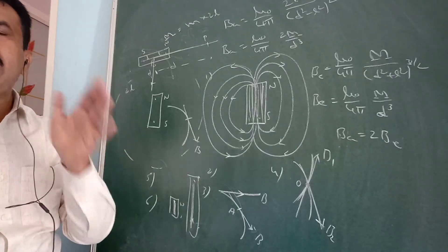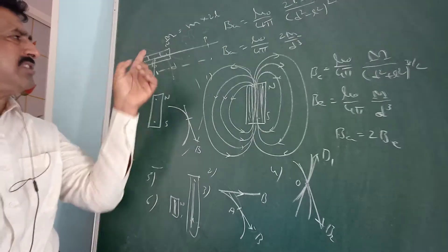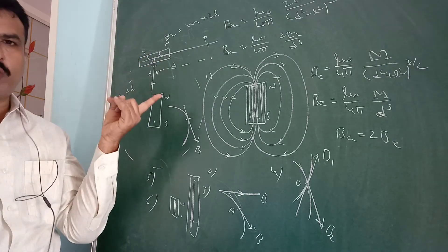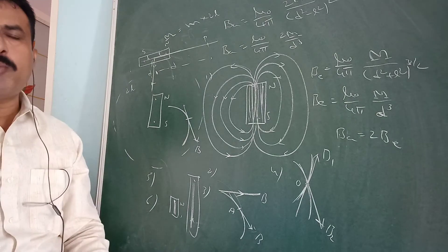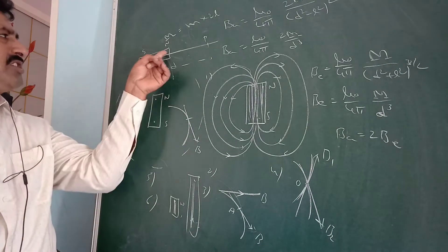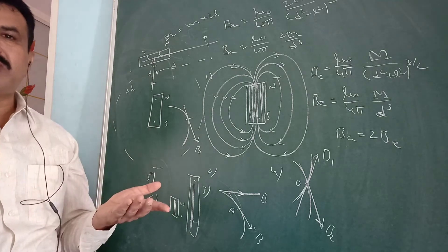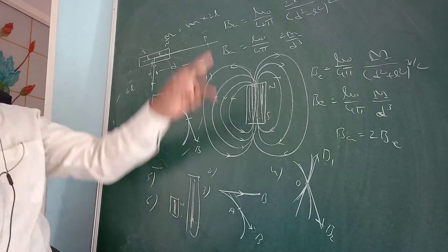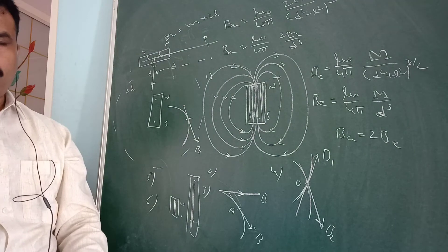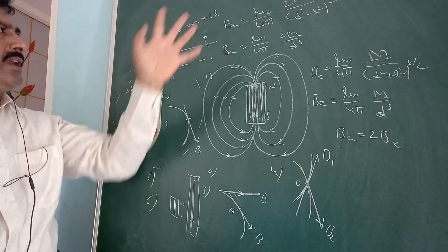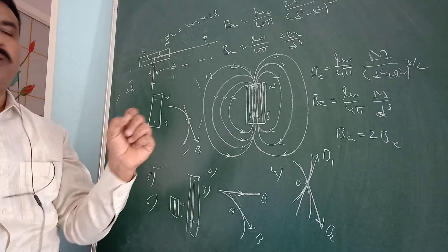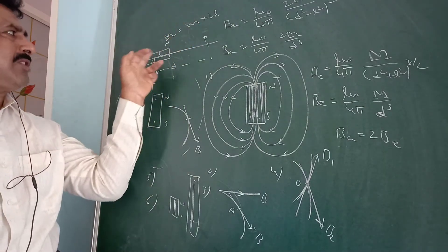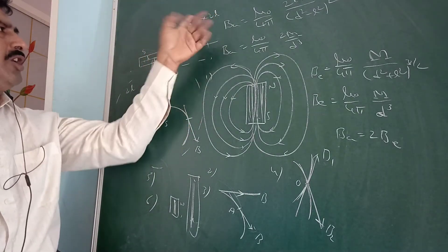Two equal and unlike poles separated by a certain distance is called a magnetic dipole. The distance between the two poles is called the magnetic length, denoted 2L. The product of pole strength and magnetic length is called the magnetic dipole moment: M = m × 2L, where M is magnetic dipole moment, m is pole strength, and 2L is the distance between the two poles.